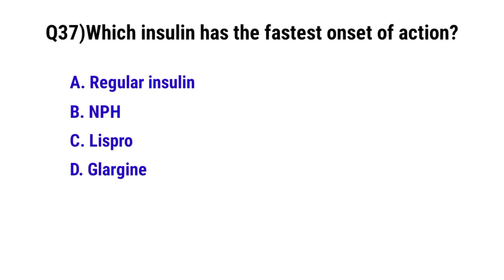Question No. 37. Which insulin has the fastest onset of action? The correct option is C: Lispro.